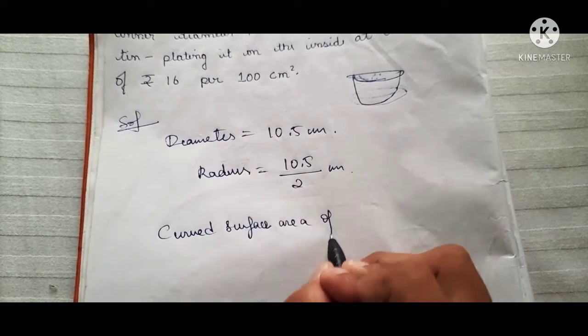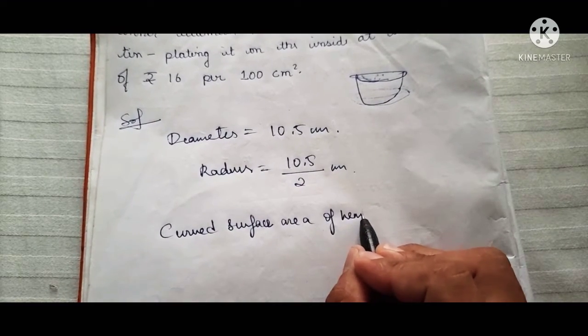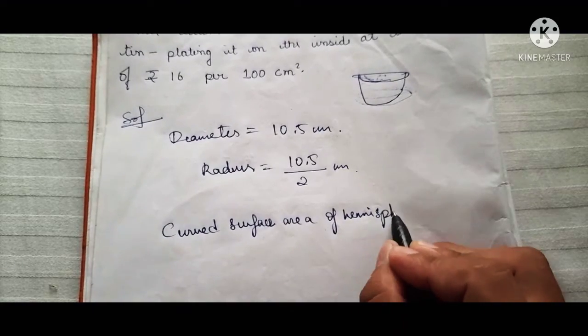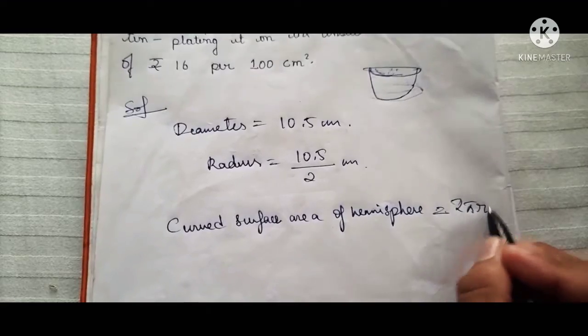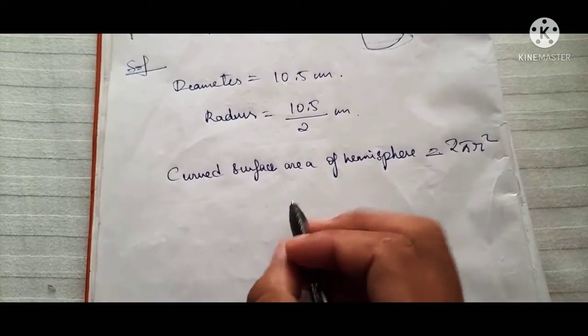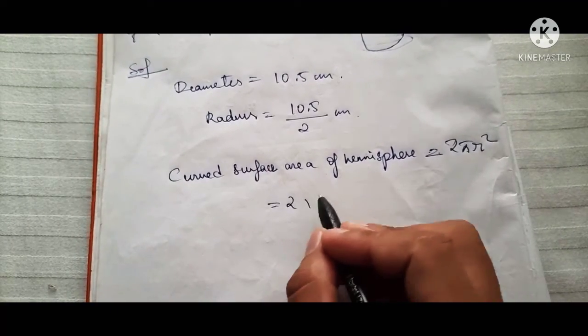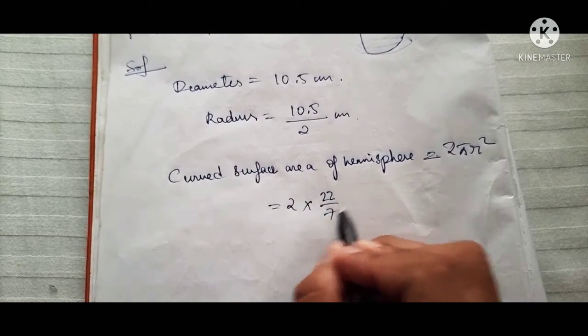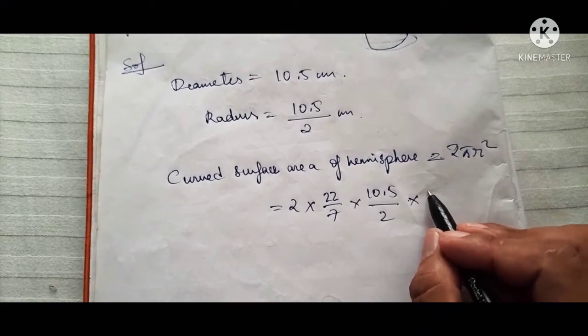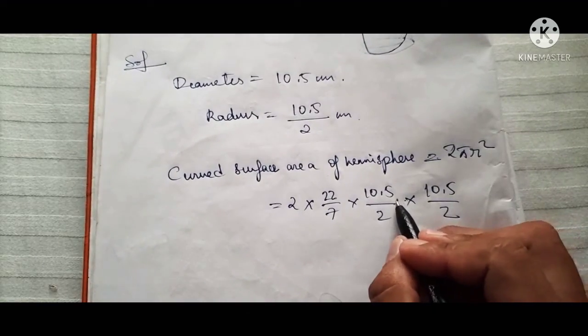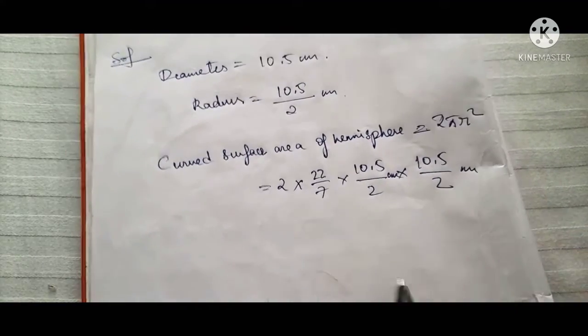So curved surface area of hemisphere will be 2πr². Okay, so 2π is 22 by 7, and radius is given here 10.5 by 2, and 10.5 by 2 centimeters. Centimeter square, okay.